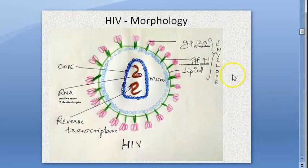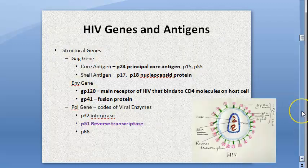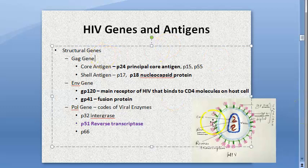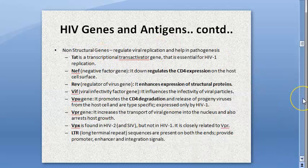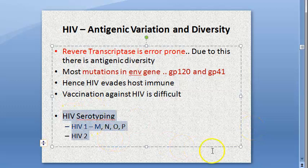Moving on, we saw the morphology of the virus. It has enveloped proteins like GP120 and GP41. GP41 is the fusion protein; GP120 helps in binding to the receptor on the host cell. There is also the reverse transcriptase, and two identical copies of the RNA. We also saw the antigens and the non-structural genes: tat, nef, rev, vpu, and all that.